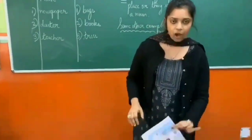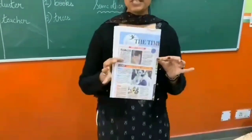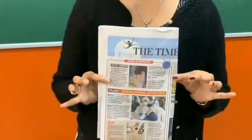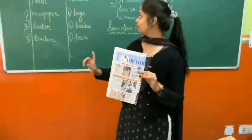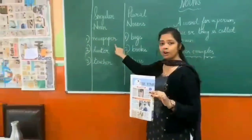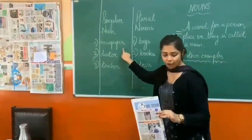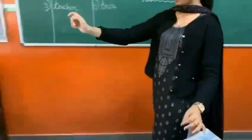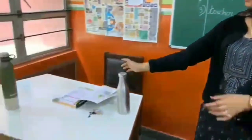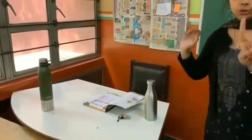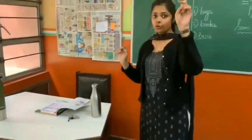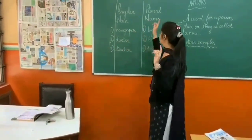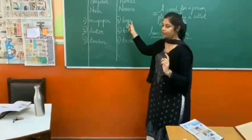Now, how many newspapers am I holding in my hand? One. So, it will come under your singular noun. Let us look at some other objects. How many bottles are there on the table? Two. So, it is more than one, and then it will come under your plural nouns.